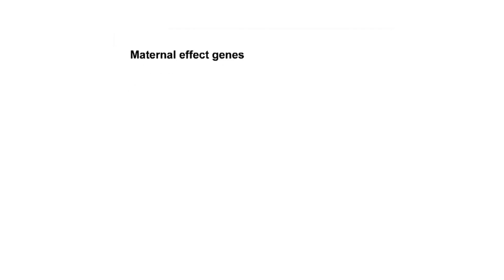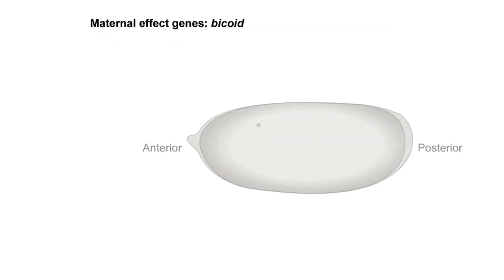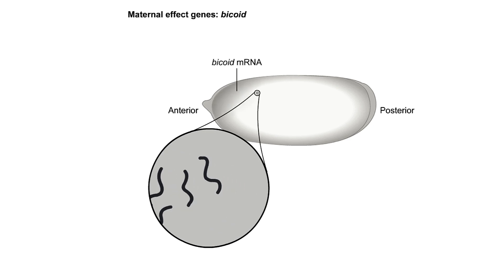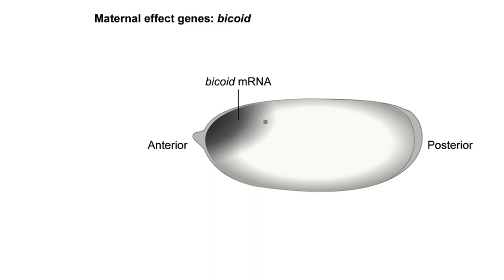The bicoid gene, or BCD gene, is an example of a maternal effect gene. The mother transcribes the bicoid gene during oogenesis, and the resulting mRNA becomes localized near the anterior pole of the egg. After fertilization, translation of the bicoid mRNA produces bicoid protein, which diffuses to form a concentration gradient from the anterior to the posterior end.